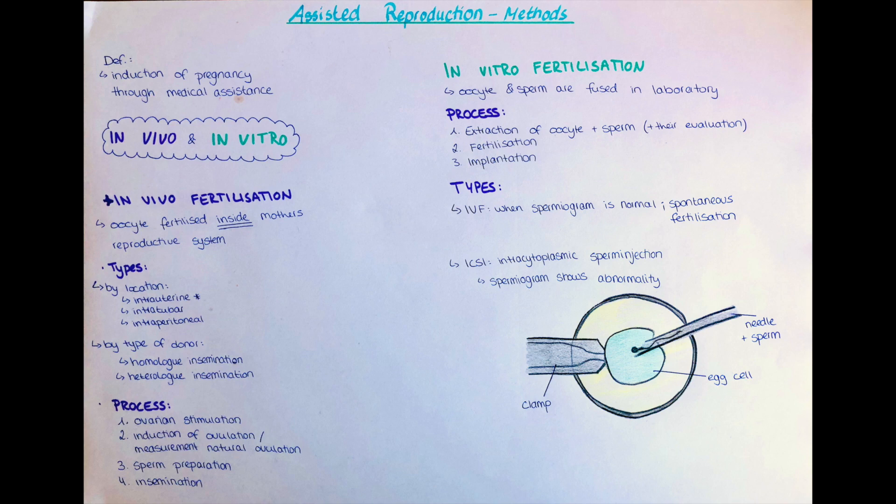Before introducing the sperm into the uterus, it has to be collected, evaluated, and the equipment has to be prepared. Also, the vagina and cervix will be cleaned properly, as an ascending infection to the uterus could lead to the necessity of a hysterectomy. The sperm will then be led into the uterus with a catheter.